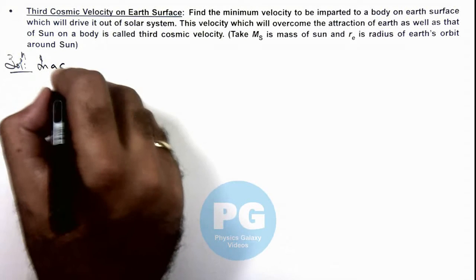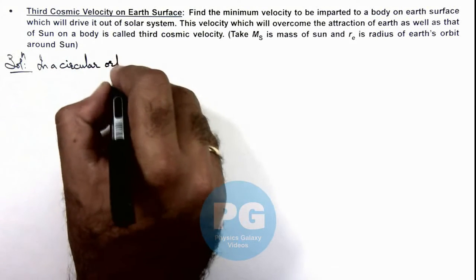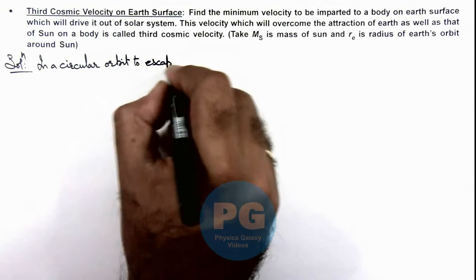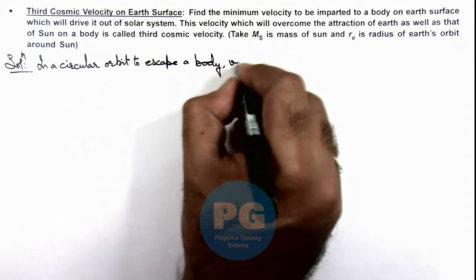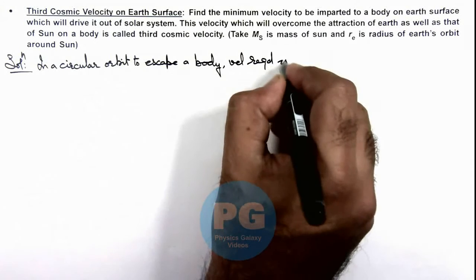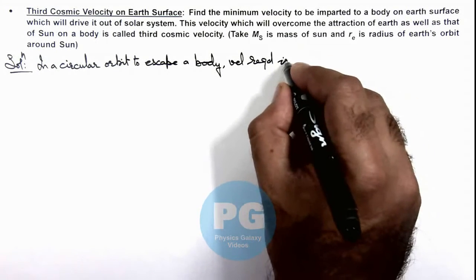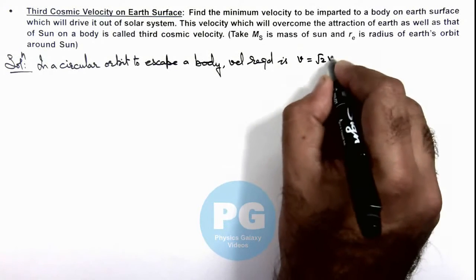In a circular orbit, to escape a body, velocity required is - the velocity required we know it can be given as v is equal to root 2 times the orbital speed.